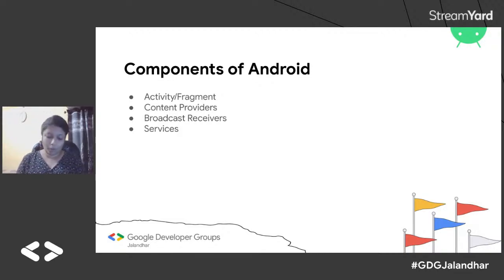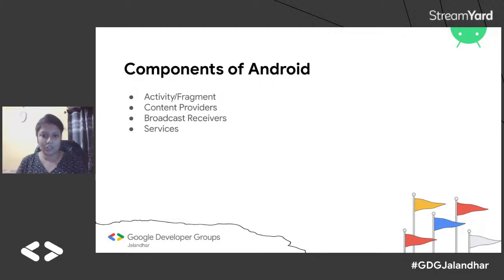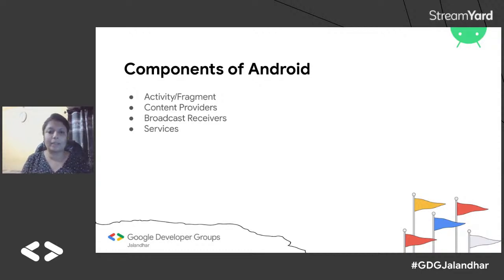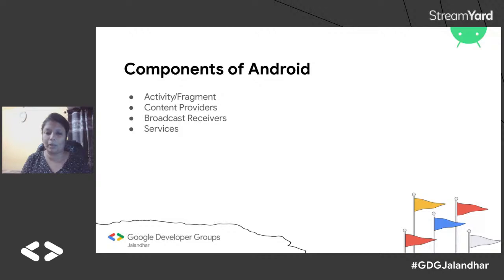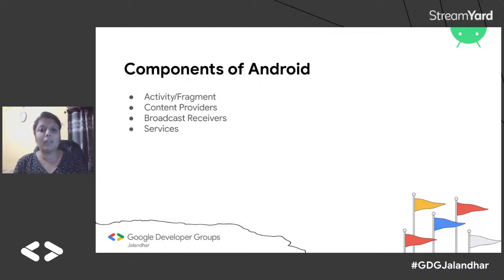The basic building blocks of an Android application are Activity and Fragment. Just as a website has web pages, in mobile applications we call each screen an Activity. Activity is the basic building block of a mobile application. If we want to divide the whole activity into portions, we can use Fragments. So activities and fragments are the first building block of an Android application.